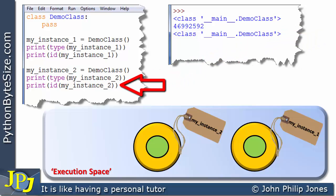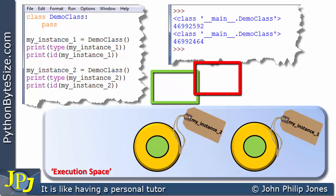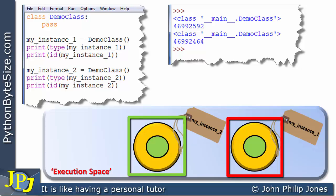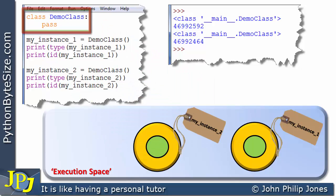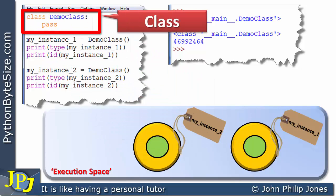And here I'm going to print the ID of my_instance_2. And you can see this is an object based on the DemoClass. These are instances, these objects of the class.